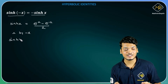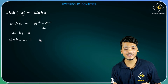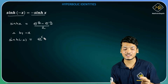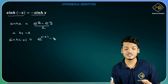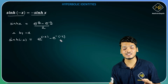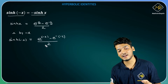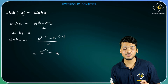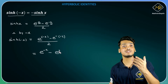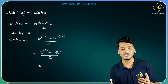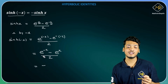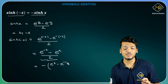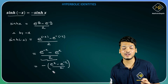Then I will get sinh(-x) equals to e raise to minus x minus e raise to minus of minus x divided by 2. So friend, yahan pe aap dekhenge, milega e raise to minus x minus e raise to x — yahan minus plus ho jayega. Then e raise to x divided by 2. Now taking minus common from this expression I will get e raise to x minus e raise to minus x divided by 2.